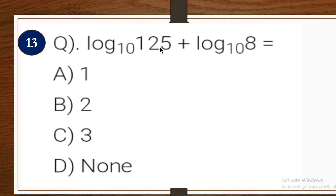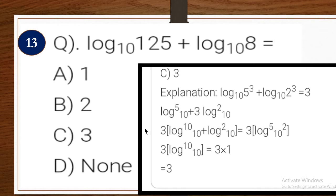Next one: log of 125 base 10 over log of 8 base 10. Options: A: 1, B: 2, C: 3, D: none. Explanation: 125 = 5³, and simplifying using logarithm rules gives a value of 3. The answer is C, which is 3.